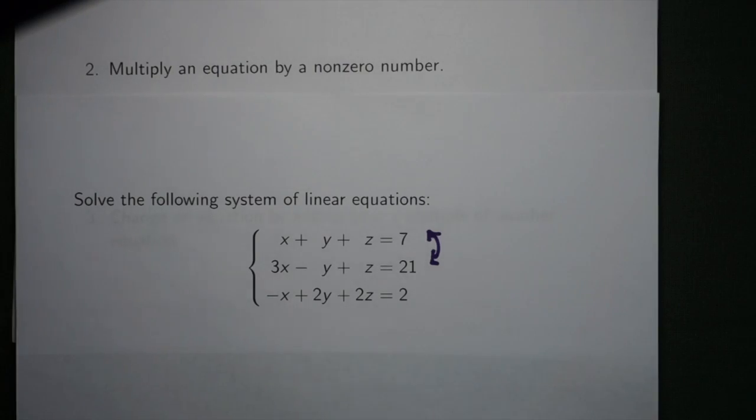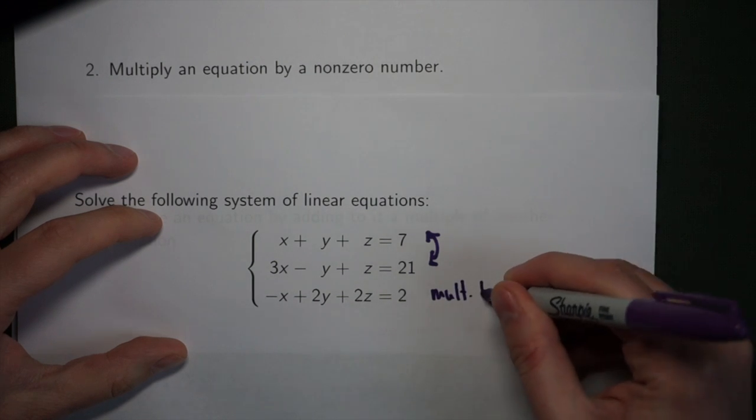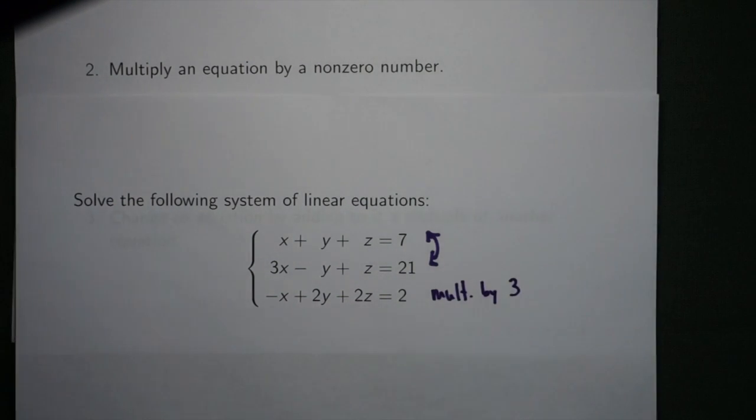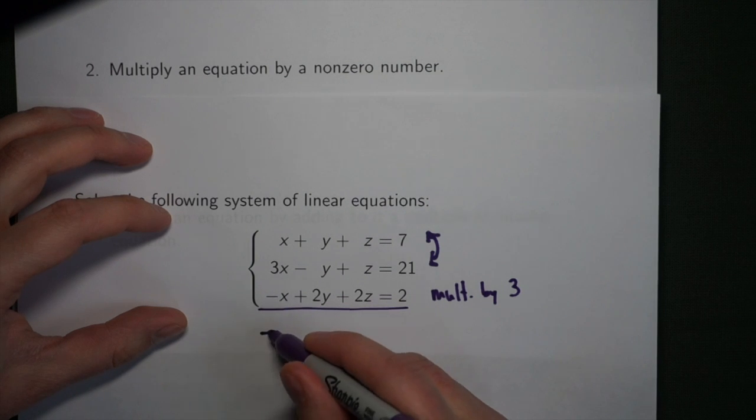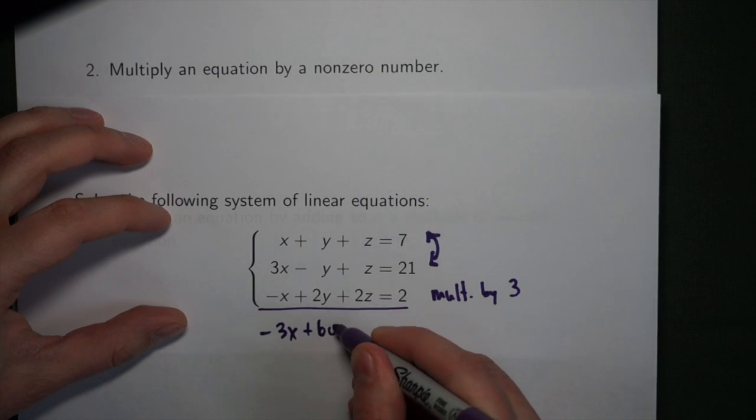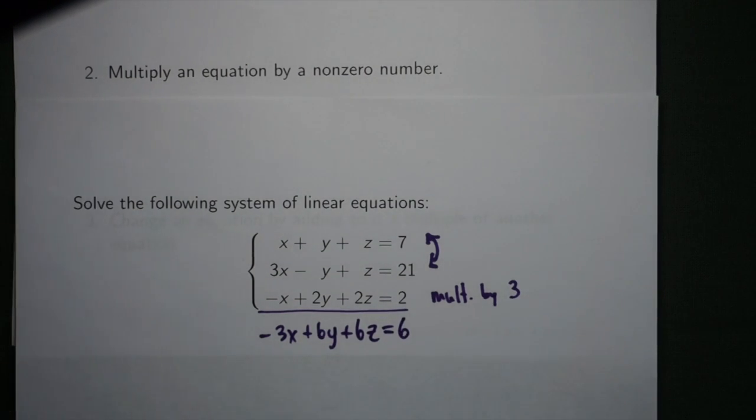The second action available to me is to multiply an equation by a non-zero number. If I want to solve this system of equations, it might be helpful to multiply this last equation by three. What I do is I just multiply all the coefficients by three. As we know from algebra, this doesn't change the solution set for the system, so multiplying by three is just a way of changing the appearance, but keeping the same solution.